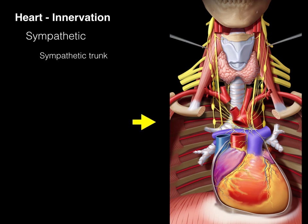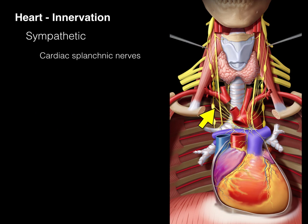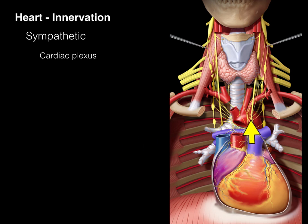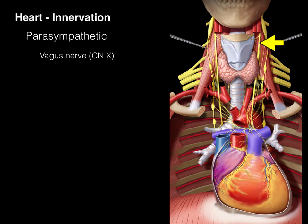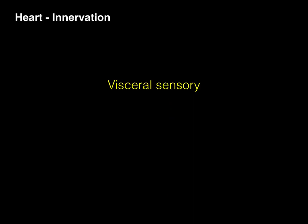Here's another illustration showing many of these structures. There's the sympathetic ganglion and the trunk going up to the superior cervical ganglion, and here's a cardiac splanchnic nerve going right down to the cardiac plexus, which courses around the aortic arch. We also have the vagus nerve coming down from the medulla through the neck, also going to this cardiac plexus around the aortic arch.